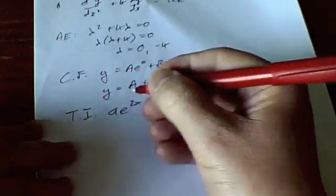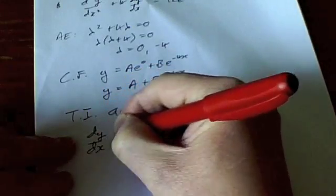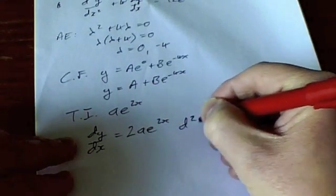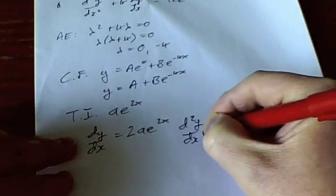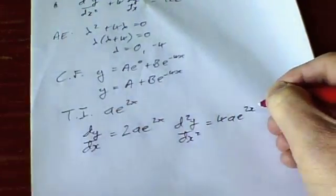Now find dy/dx and that's going to be 2Ae^(2x), and d²y/dx² then is 4Ae^(2x).